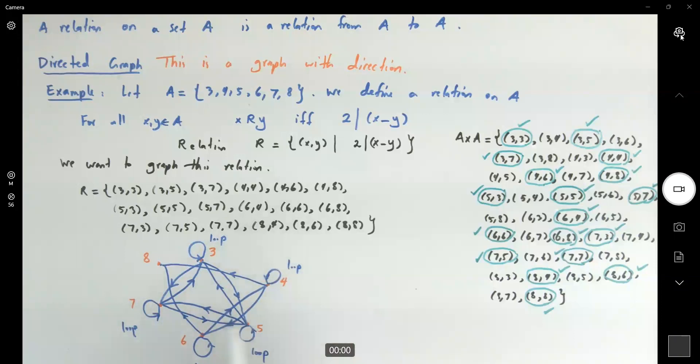8 to 4, you have 4 to 8, now 8 to 4 in the opposite direction. 8 to 6, 6 to 8, now 8 to 6 in the opposite direction. And 8 to 8, which leads to a loop on 8. Look at this, this is called the directed graph representing this relation.